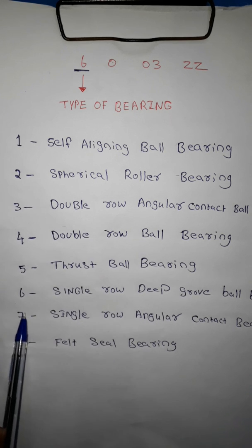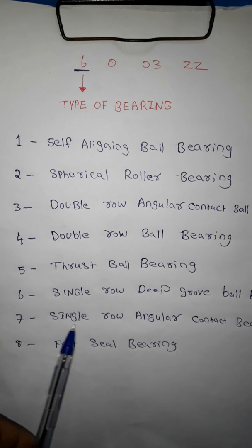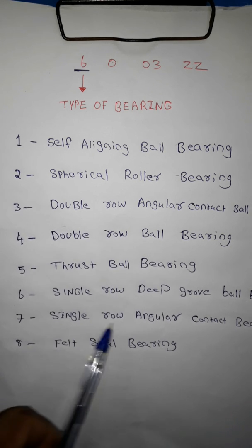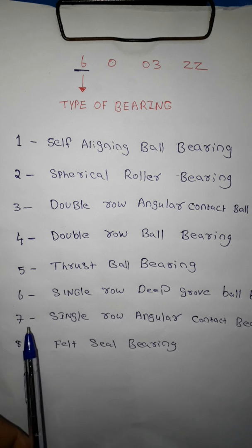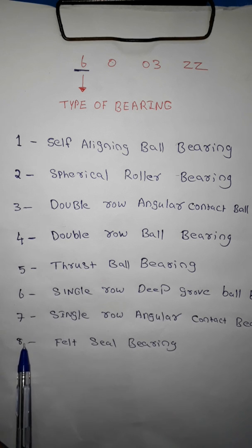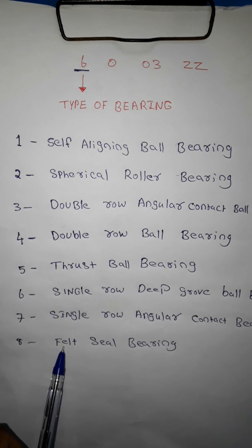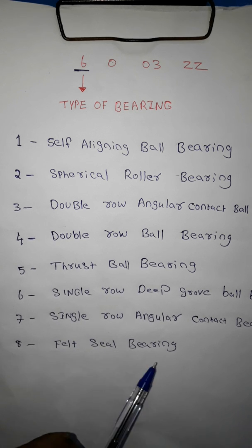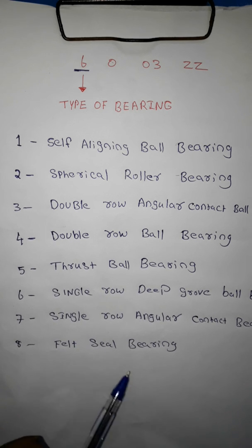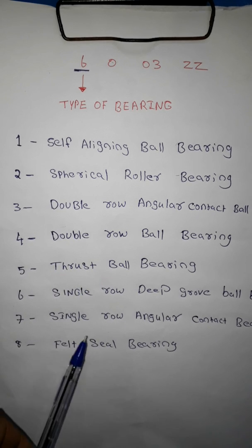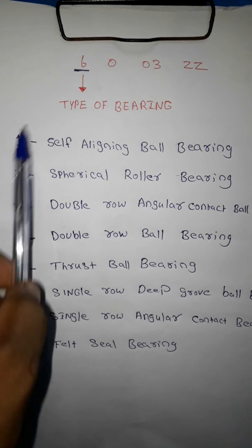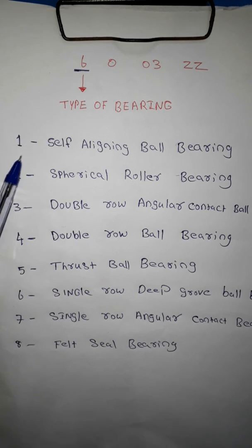7 — single row angular contact bearing, 5 — felt seal bearing, 3 — double row bearing.